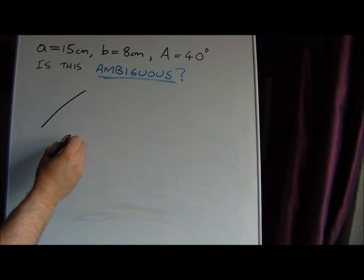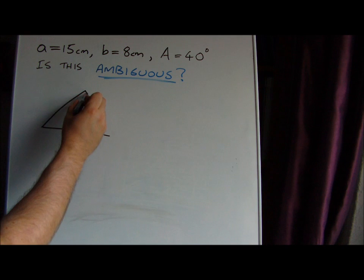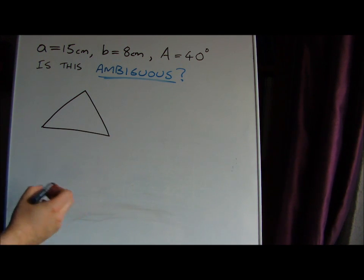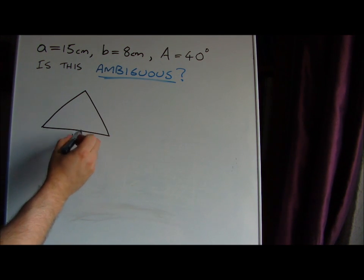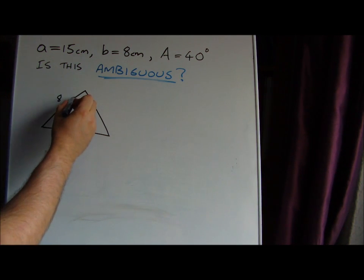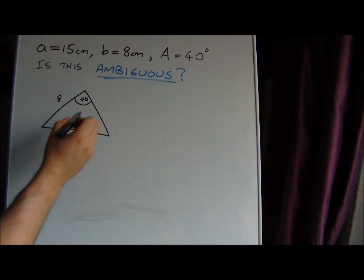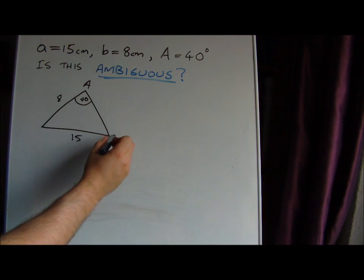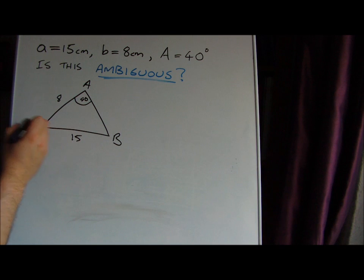We'll begin by making a sketch. It doesn't have to be accurate. So I'm just going to draw a triangle. Let's call this the side with 15, this is 8, that must mean this is 40 degrees. Now if we're going to use the sine rule, we've got to either find angle B or C. It must be angle B because we know the opposite side. We can't calculate C yet because we don't know that side.